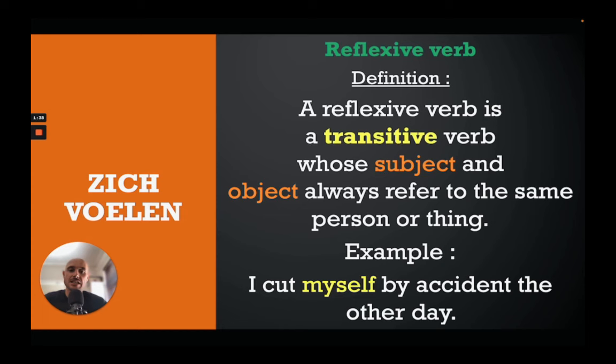The example is: 'I cut myself by accident the other day.' First, let's look at the verb — it's 'cut.' Is it a transitive verb? I cut what, I cut who? Yes, it can have an object. You can say 'I cut the bread' — there's your object. In this case 'I' is our subject, but the object is 'myself.' I cut myself — and together that makes a reflexive verb: to cut oneself. 'Zich voelen' as a translation of 'to feel' works the same way.